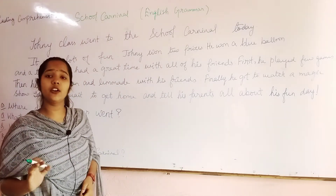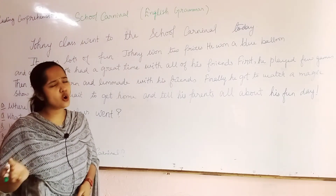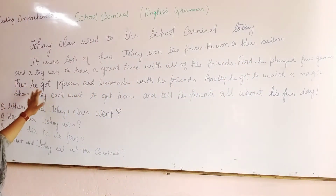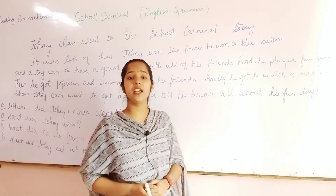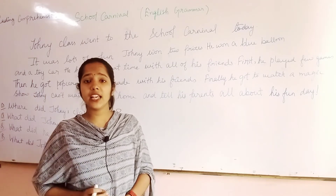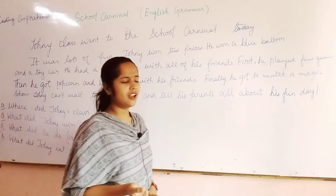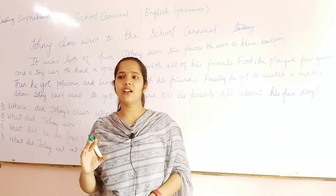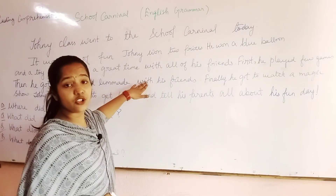He had a great time with all his friends. Johnny had a very great time. When you go anywhere with your family, school, or friends, you have so much fun. First, he played a few games. Then he got popcorn and lemonade with his friends. Do you know what is popcorn? In the market there is a packet with the name popcorn. And lemonade is like a soft drink. He ate and shared with his friends.